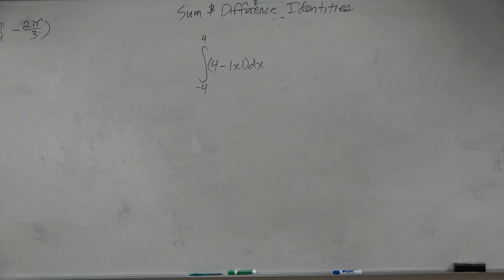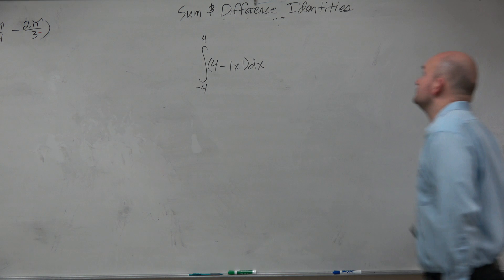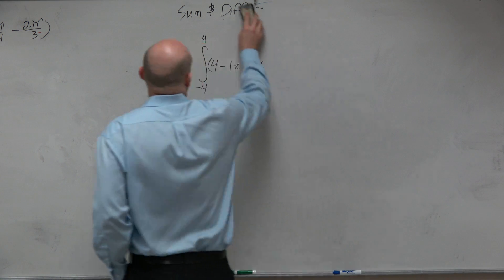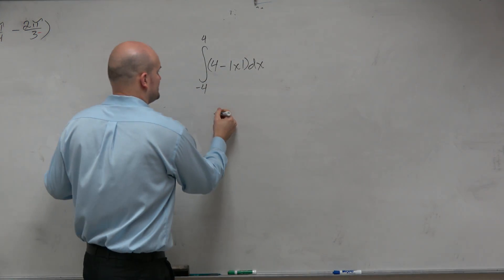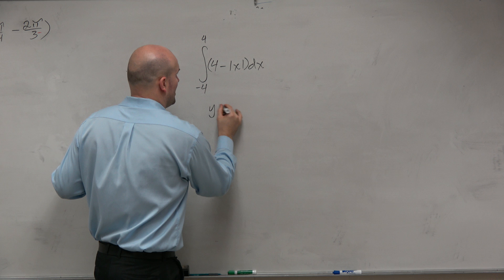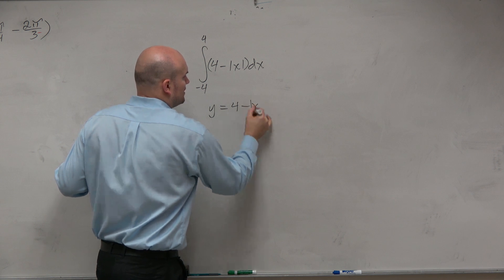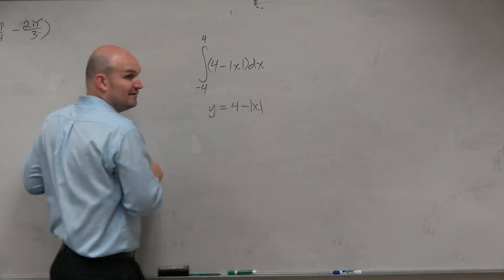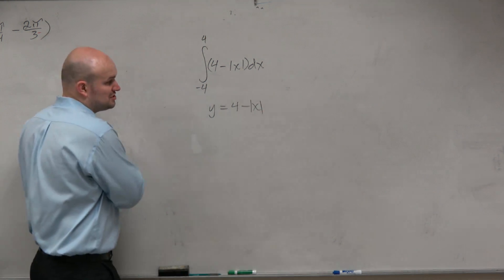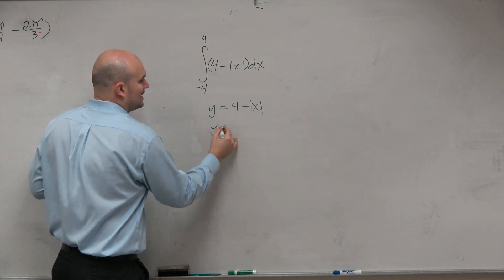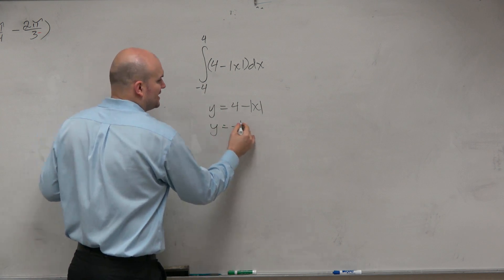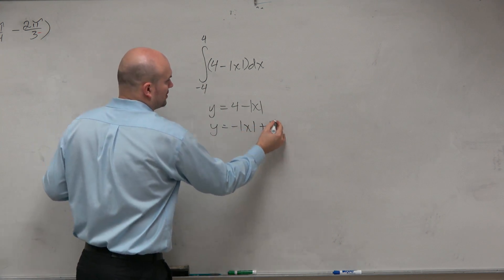Let's take a look at this one. The main important thing you need to understand is we have an equation. Basically, this is asking you for y equals 4 minus absolute value of x, which another way I could look at this is y equals negative absolute value of x plus 4.